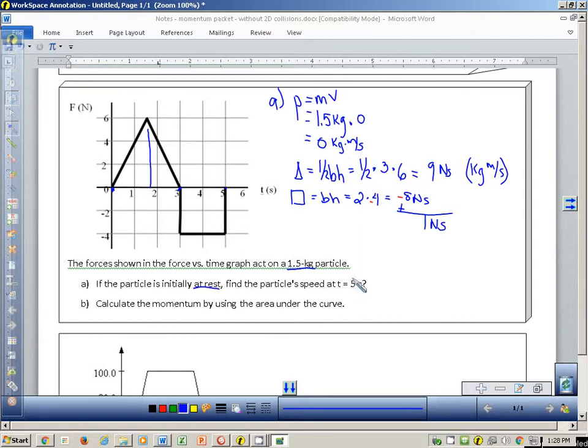So what I need to do to find it at five seconds is I actually need to basically do this over again. I need to do P is equal to M V. My momentum at this point is going to be one Newton second. It has a mass of 1.5 kilograms. What's the velocity now? Well, once you divide one by one and a half, you end up with an answer of 0.7 meters per second. So here is my answer to part A.